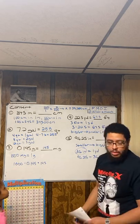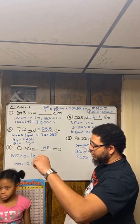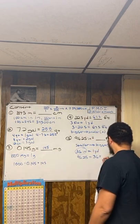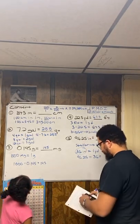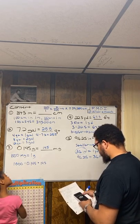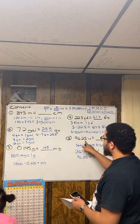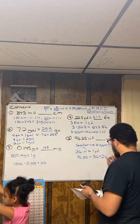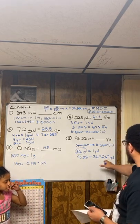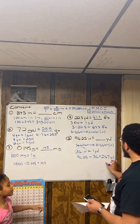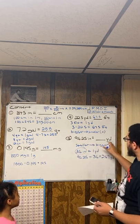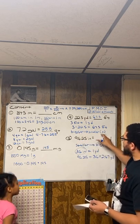I'm going to grab the calculator for this one. 96.25 divided by 36, rounded to two decimal places, equals 2.67 yards. That makes sense because a yard is bigger than an inch, so there will be fewer yards than inches. Keep this in your notes: smaller to bigger — divide; bigger to smaller — multiply.